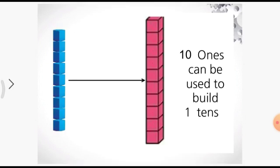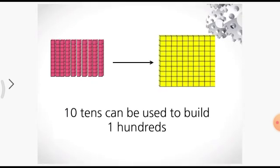Just have a glance at the picture, that will make it more clear. Here, ten ones can be used to build one tens. So children, just count the blocks of ones — there are exactly ten blocks and together they make one tens. Now here, ten tens can be used to build one hundred. If you count, there are ten blocks of tens and when you put them all together, you will get one block that makes a hundreds block — that is one hundred.